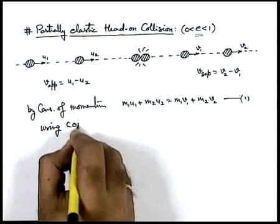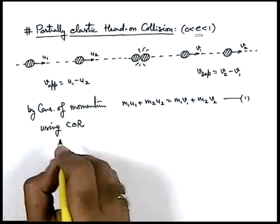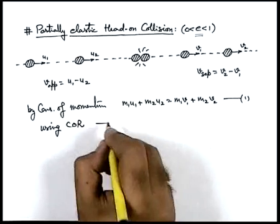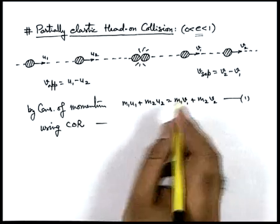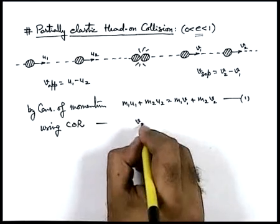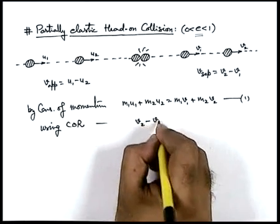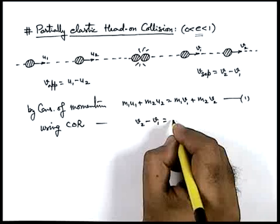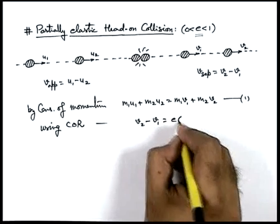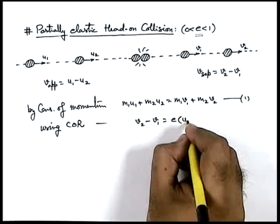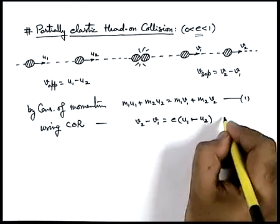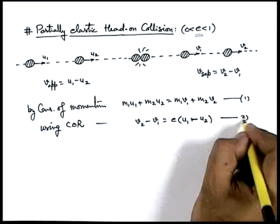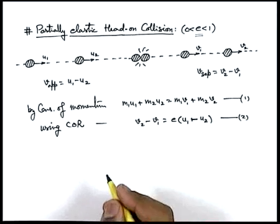Using the coefficient of restitution, we can write: separation velocity v-two minus v-one equals e times the approach velocity, that is u-one minus u-two. That is equation number two.